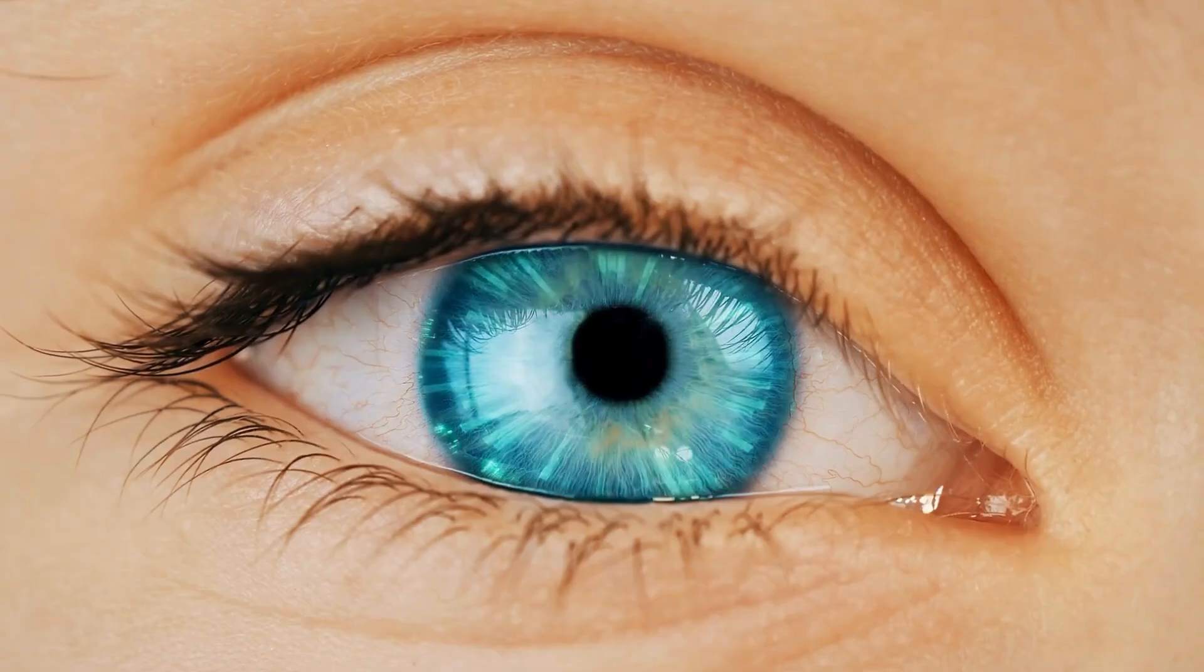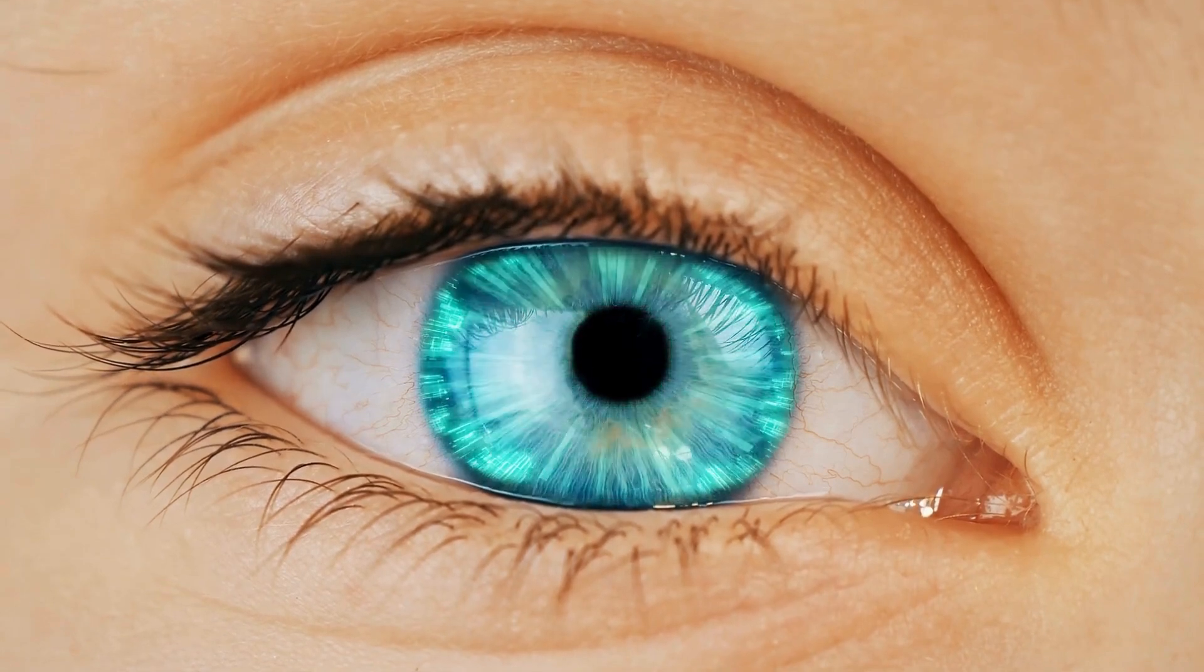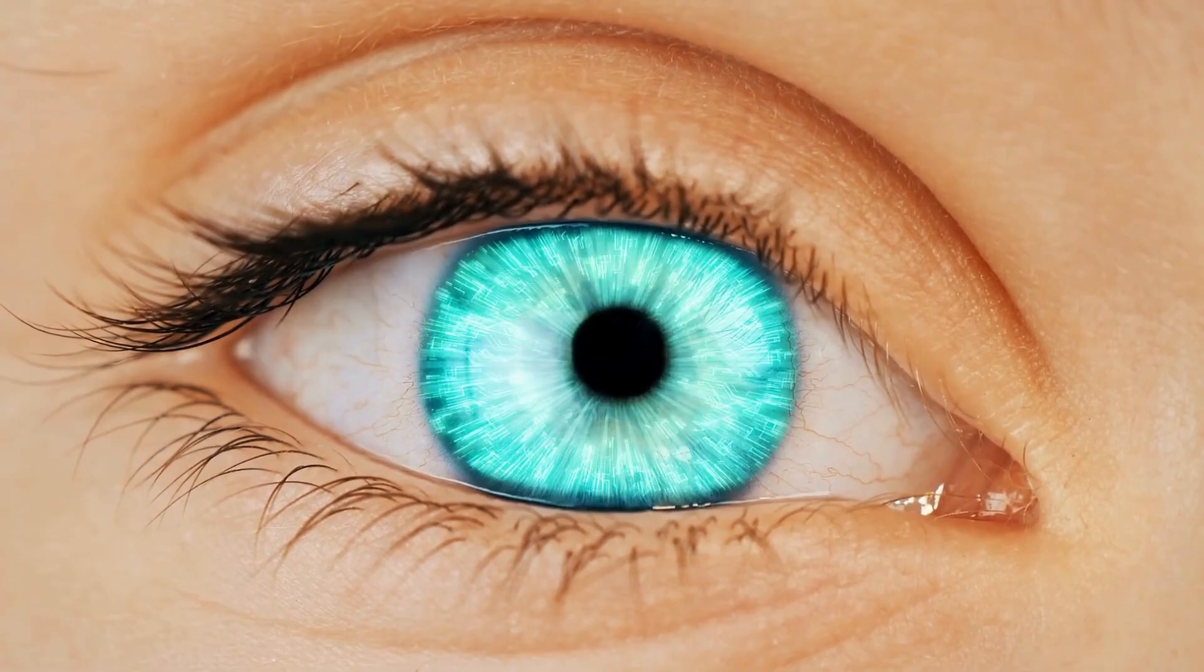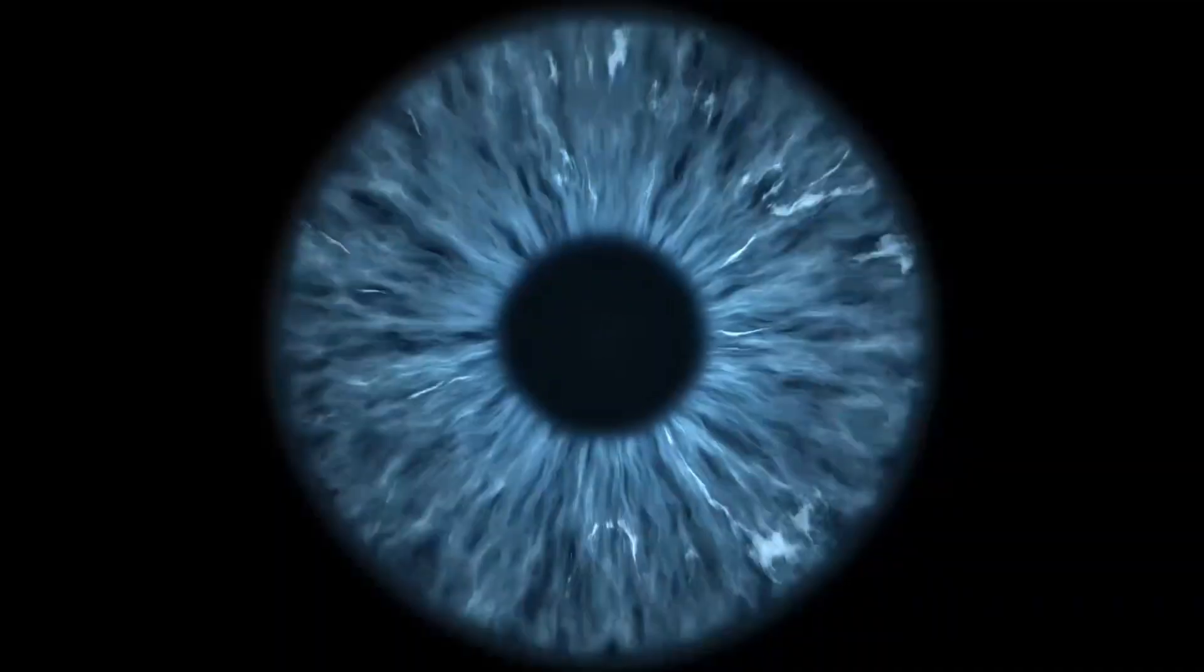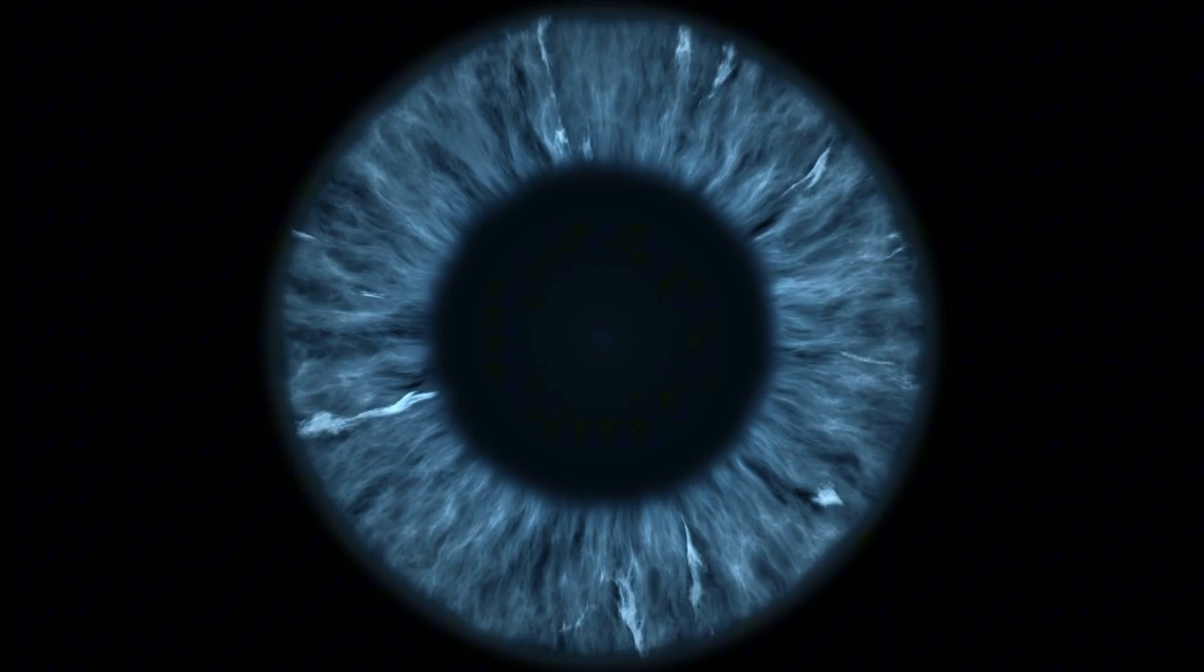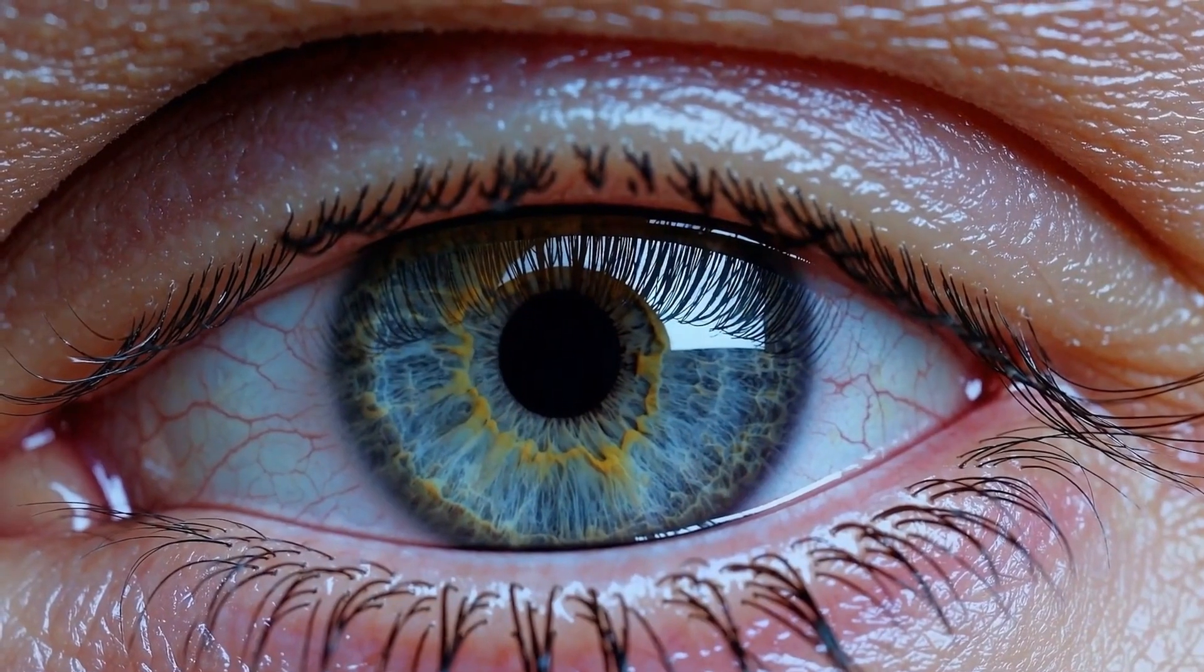Scientists have recently discovered a new color called Olo, described as an intensely saturated blue-green hue that lies beyond the natural limits of human vision. What is Olo? Olo is a novel color perceived when only the M-cones, medium-wavelength cones responsible for green light sensitivity in the human retina, are stimulated in isolation.